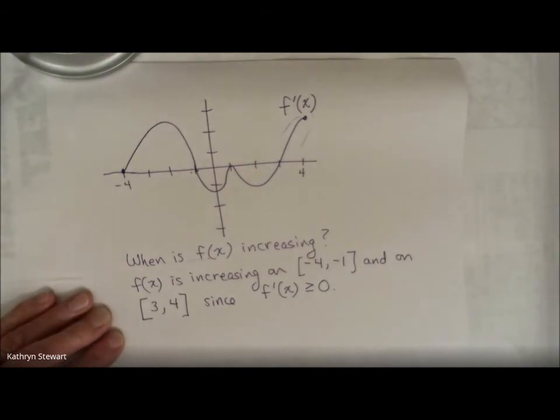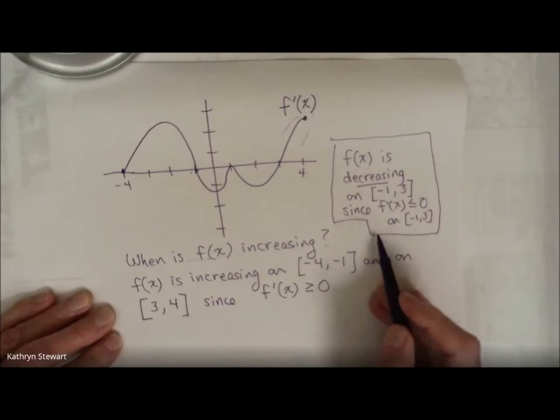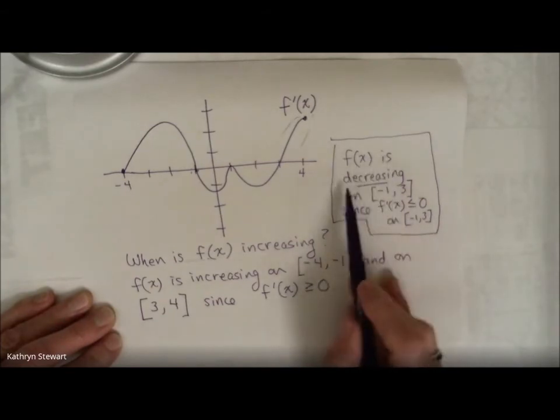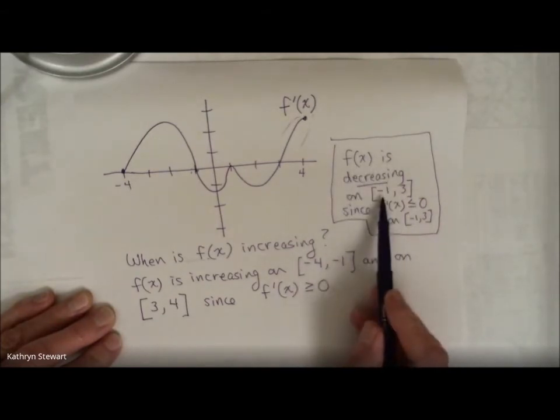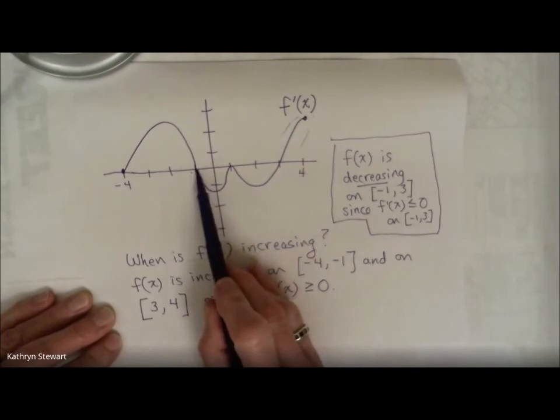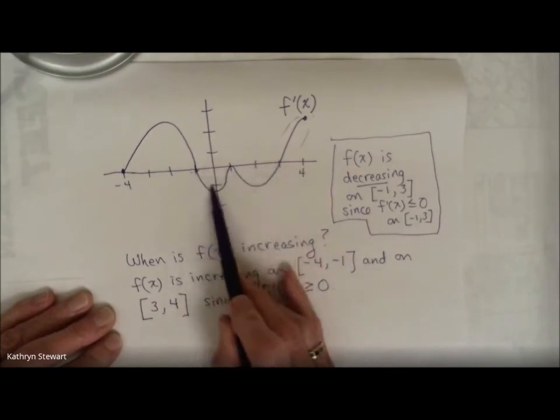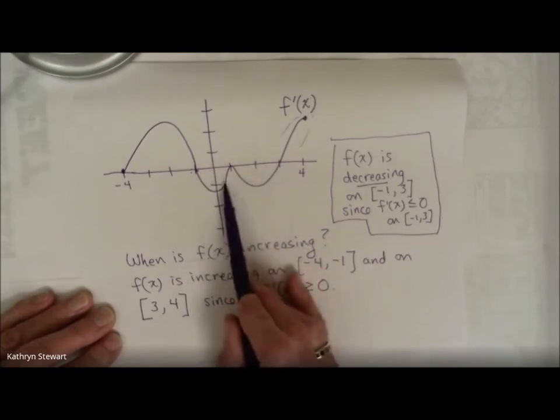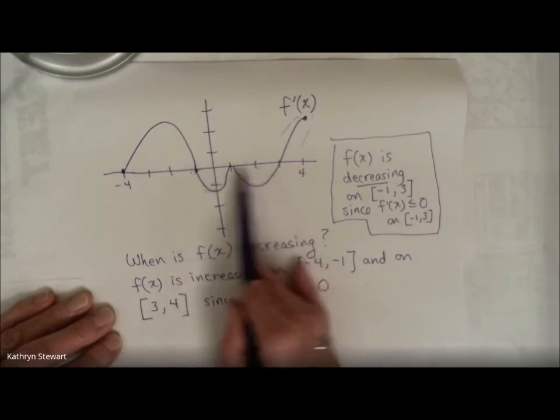Okay, I bet you can guess when this original function f of x is decreasing. And did you conclude this? That f of x is decreasing on the interval negative 1 to 3, negative 1 to 3, since f prime of x is less than or equal to zero on that interval. In other words, the values of the derivative are negative.